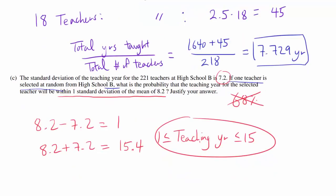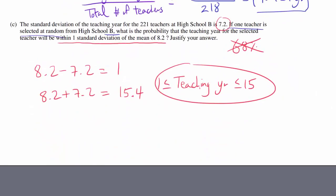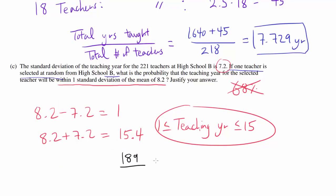Let's go to high school B and find teachers with 1 year all the way to 15 years. Reading from the histogram: 79, 34, 28, 29, and 19. Adding those up: 79 plus 34 plus 28 plus 29 plus 19 equals 189. So there are 189 teachers out of 221, making the probability 189 out of 221.